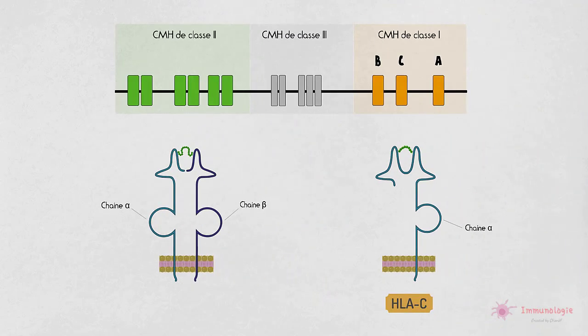La région de CMH de classe 2 contient trois locus appelés HLA-DR, HLA-DQ et HLA-DP. Chacun de ces trois locus sur chaque chromosome contient des gènes séparés désignés A et B, codant respectivement pour les chaînes alpha et bêta.